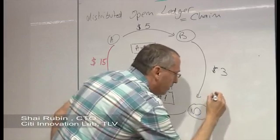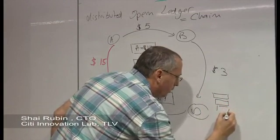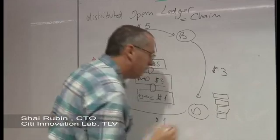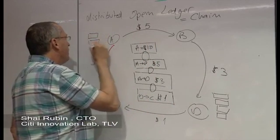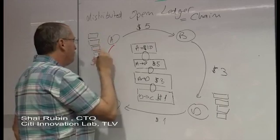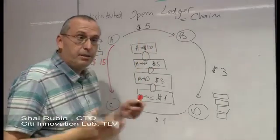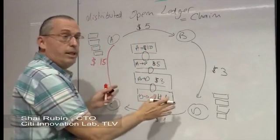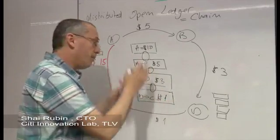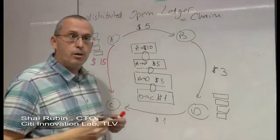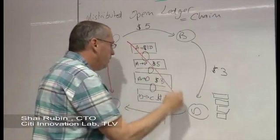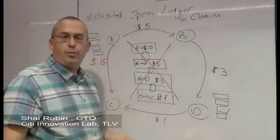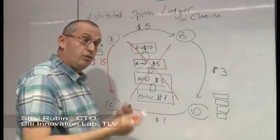D, for example, can have a copy of the ledger and can hold it in his node. A can do the same and have a copy of the ledger. And anyone else that participates in this network can hold the ledger, can hold the chain of events that happens. Now what we got is that the ledger is distributed and essentially we don't need anymore the centralized place that holds the ledger. We achieved the goal, we got rid of the centralized trusted party.